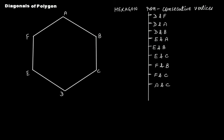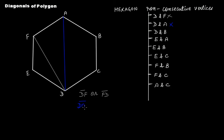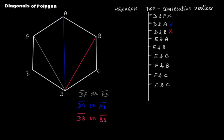If you connect d and f, this line segment df is one diagonal. Then connect d and a — the line segment da is another diagonal. Then d and b — this is another line segment, another diagonal. Then e and a — line segment ea is another diagonal.